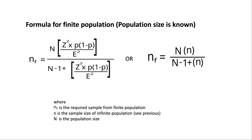Formula for finite population — when the population size is known: first calculate the sample size for an infinite population, then use this formula to determine the required sample for the known population size. Here, nf is the required sample from the finite population, n is the sample size for the infinite population, and capital N is the known population size. In the next video, some examples using these formulas will be solved.